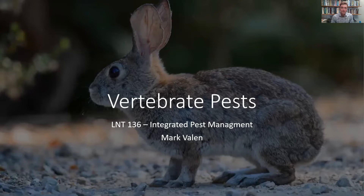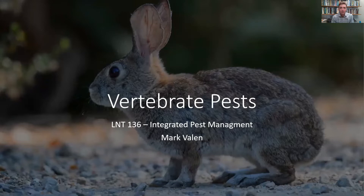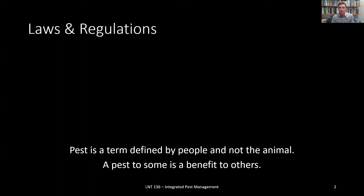Our topic is vertebrate pests. We're going to talk about identification, monitoring, and control methodologies for the various types of larger pests that can enter the landscape. The title image is a cottontail rabbit — cute and fluffy, people love them, but if they enter a vegetable garden, they can wreak havoc and really hurt your plants. Before we talk about individual pests, we'll talk about some of the laws and regulations that govern our wildlife. Remember that 'pest' is a term defined by people and not by the animal. There's no such thing as a pest animal in and of itself — it's only people who apply that label to any animal they consider a nuisance.